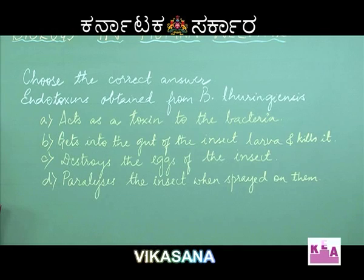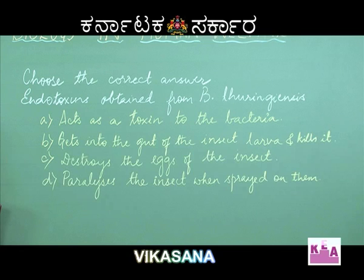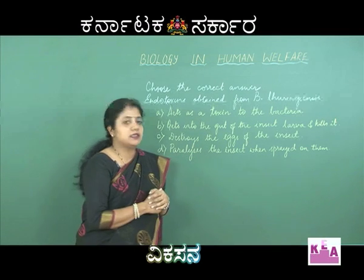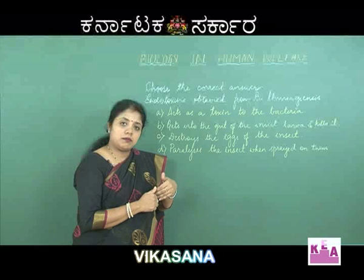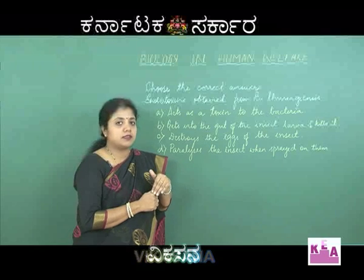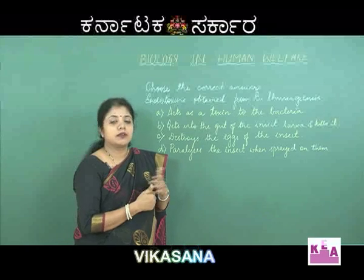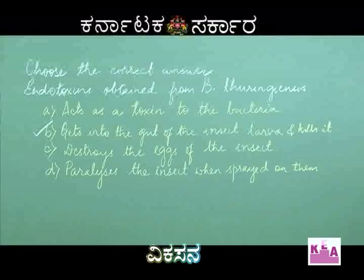The endotoxin does not act as a toxin to the bacteria, does not destroy eggs, and cannot paralyze the insect when sprayed on it. The effect is only on the epithelial tissue of the gut. Once consumed by the insect, inside the gut it damages the gut cells and kills the insect. So the right option is option B — the toxin gets into the gut of the insect larvae and kills it.